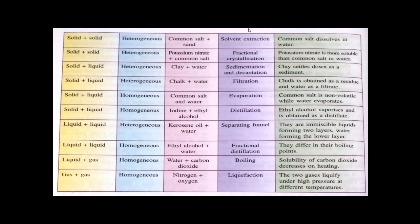Next, for a homogeneous liquid-liquid mixture — ethyl alcohol and water — these two form miscible liquids, so fractional distillation is the process. The two components differ in their boiling points. The boiling point of ethyl alcohol is around 78 degrees Celsius and water is 100 degrees Celsius. You will not get totally separated fractions in that manner, but a very good percentage can be obtained.